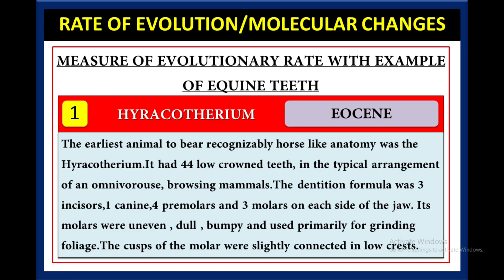Now we will talk about the measure of evolutionary rate with the example of equine teeth. We are going to analyze the molecular changes and evolutionary changes in the teeth of equines to measure the evolutionary rate. In the first period, the Eocene, Hyracotherium originated. The modern horse came from Hyracotherium, the earliest animal to bear recognizably horse-like anatomy.